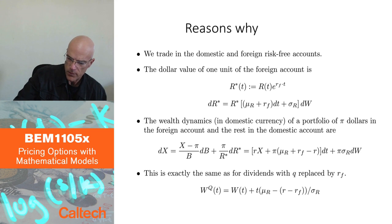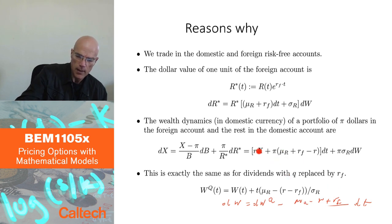Again, why is this? Just to remind you, so this was because if you look at dW from here, dW is going to be dW_Q minus (μ_Q - r + r_F)/σ dt. So if I plug in, instead of dW, this thing in red down here, I plug it back in here, then σ and σ will cancel. It's σ_R here, σ_R. Sigma_R will cancel, r will cancel, r_F will cancel, this should have been μ_R. Mu_R will cancel, and you will get rX plus something dW.